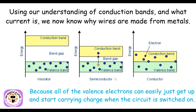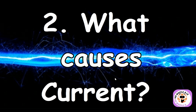Using our understanding of conduction bands, we now know why wires are made from metal — because all valence electrons can easily become delocalized and start carrying charge as soon as the circuit is switched on. That's what makes metal a great material for wires: you want all the electrons to start moving so you get current. So now let's look at what causes current.